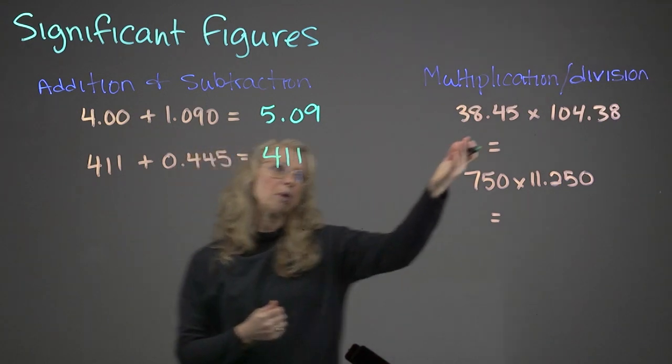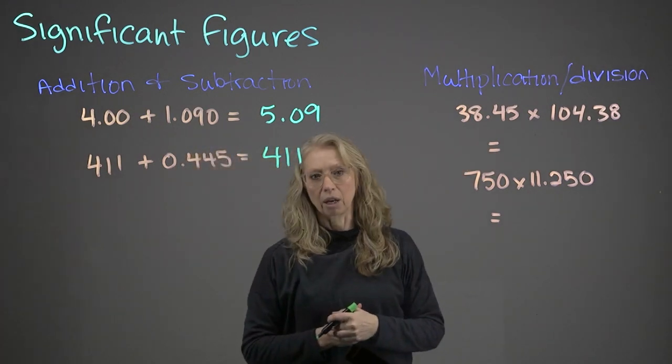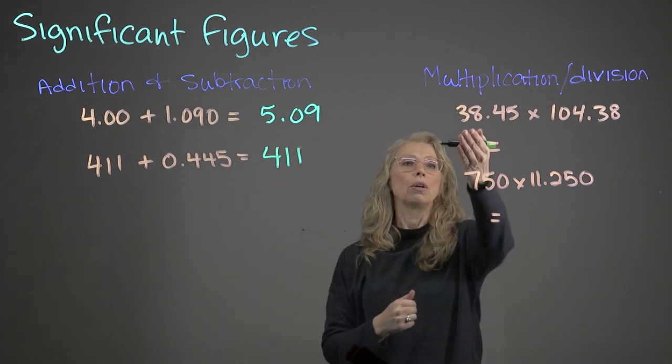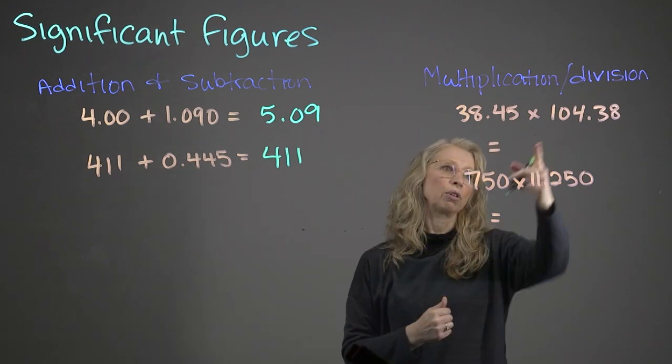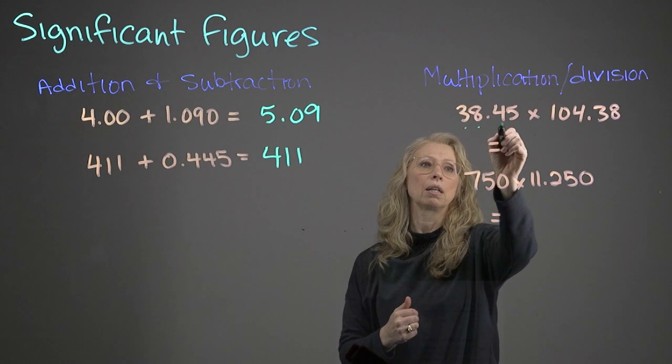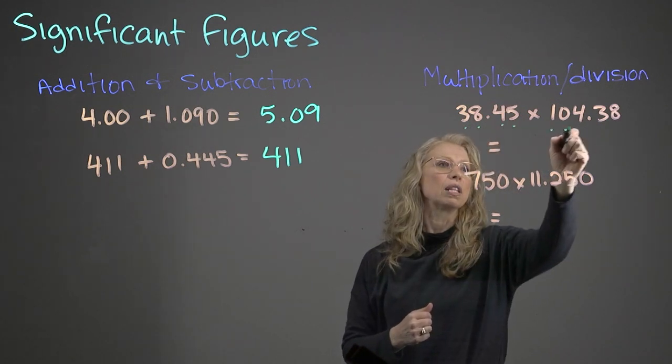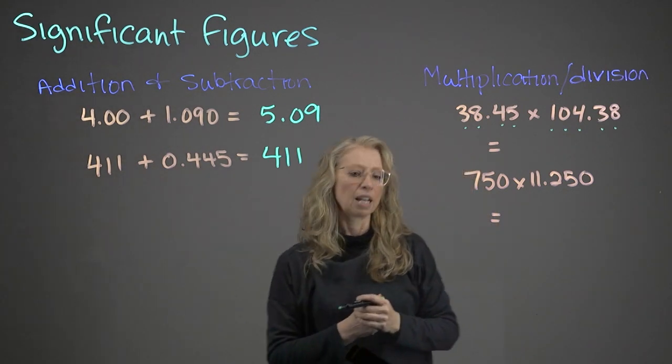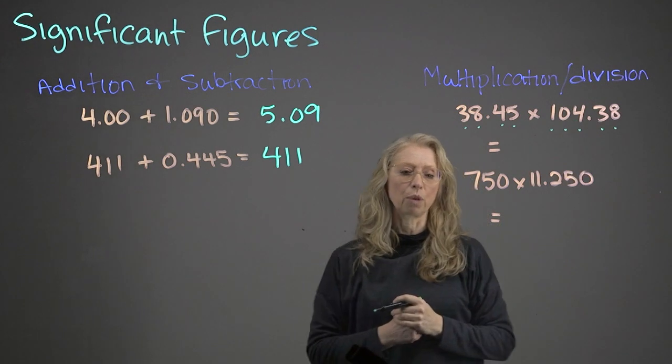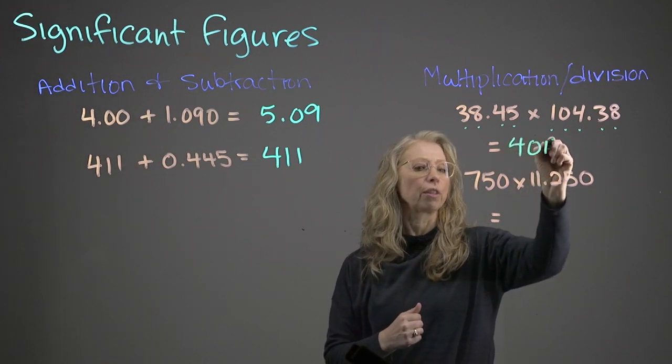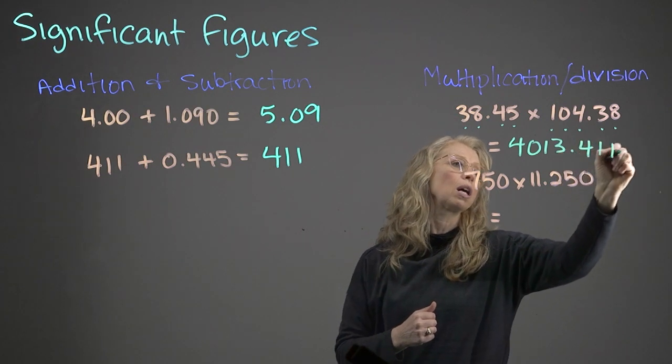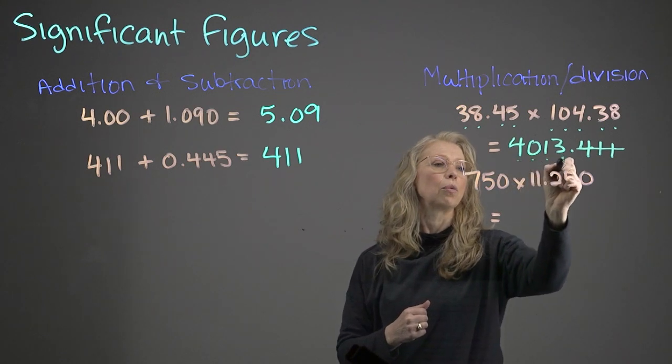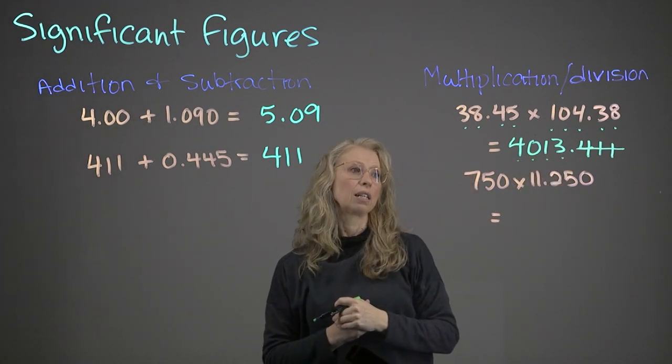Now, when we're talking about multiplication and division, it's the least number of sig figs that we have to take into consideration. So if we look here, we have 38.45 and we have 104.38. This one has 4 sig figs. This number has 5 sig figs. So our answer can only have 4 sig figs. If I did this calculation with my calculator, I would end up with 4013.411, etc. We would not incorporate that because now we can only consider the 4 sig figs in our answer.